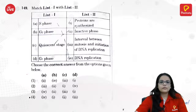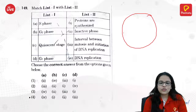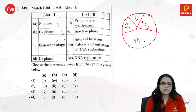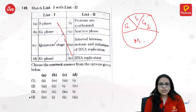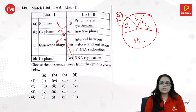The cell cycle is G1, S, G2, M. S phase is the synthesis phase where DNA replication occurs. G2 is the interval between DNA synthesis and mitosis where proteins are synthesized. The resting or inactive phase is G0. The answer is S4, B1.